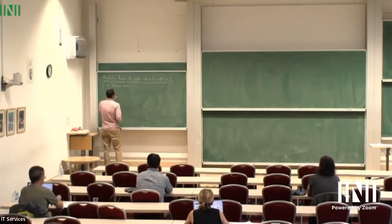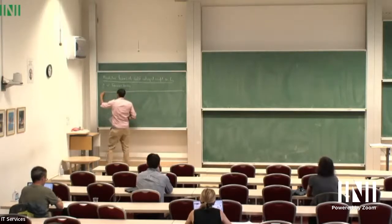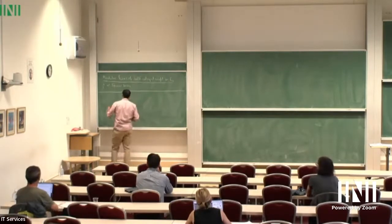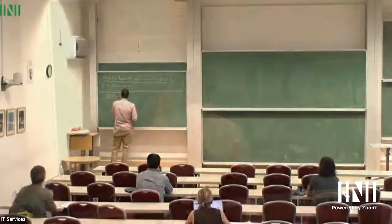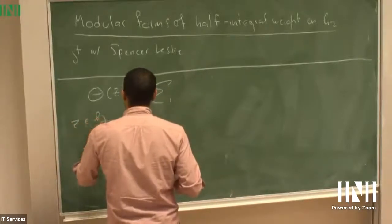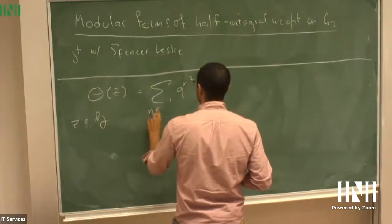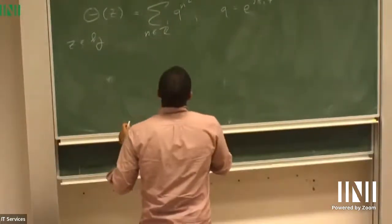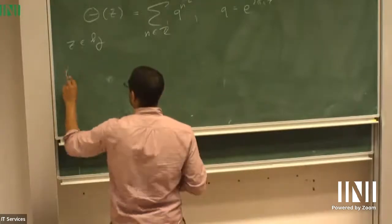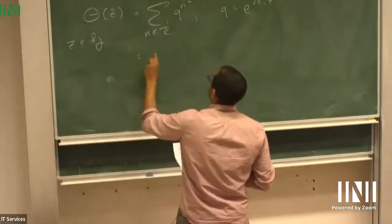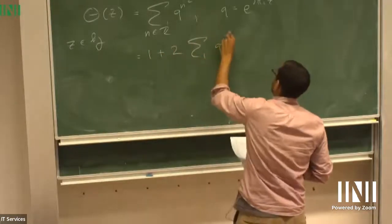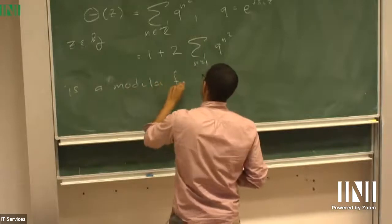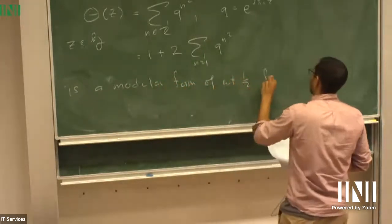I want to start off with a few classical facts, and then the main results are supposed to be analogs of these classical facts. So let me write down the classical theta function. Z is in the upper half plane, and we sum Q to the N squared, where N is an integer, Q being E to the 2 pi Z. This classical theta function is 1 plus 2 times the sum of Q to the N squared, where N is at least 1. This is a modular form of weight one-half for the congruent subgroup gamma 1 of 4.